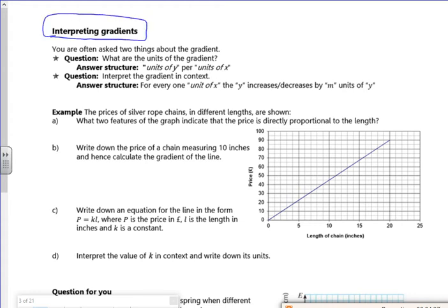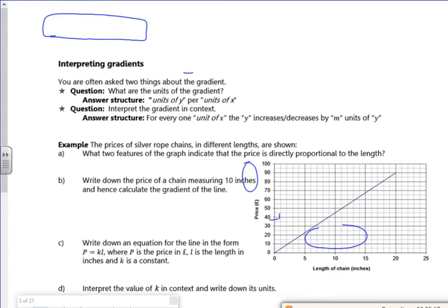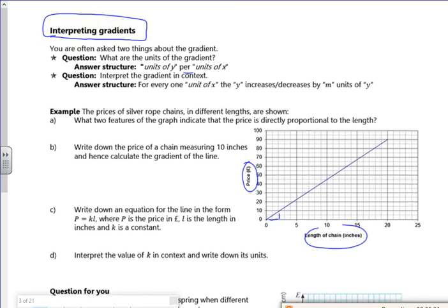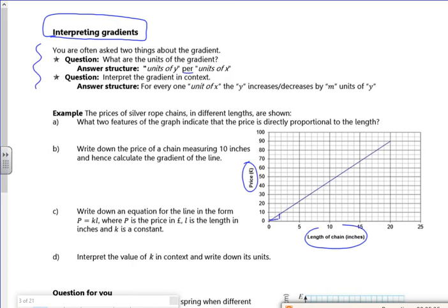Interpreting the gradients. So this blows people's minds sometimes. I've had to teach this in the past on other maths courses. So you're often asked two things about the gradients. What are the units? So you look at the y and you look at the x, and it's the y per x, whatever it is. Then you have to interpret it in context. Now the way you do is say, alright, if I went across 1 on the x, how much would I go up or go down on y? And that's what this structure is here. Now you have to follow the structure. Both of these structures to make sure it's right. So these are quite important.